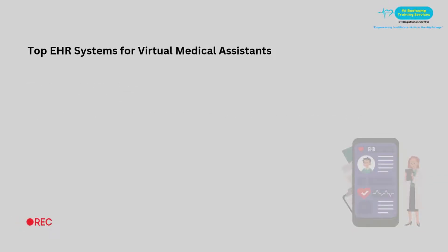Top EHR systems for virtual medical assistance include EPIC, Cerner, AthenaHealth, eClinicalWorks, and NextGen. EPIC is best for large health systems, Cerner for hospitals and interoperability, AthenaHealth for small or mid-sized practices, eClinicalWorks for ambulatory care, and NextGen for specialty practices.